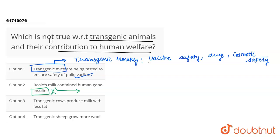But the gene that was inserted was for alpha-lactalbumin. This protein amount was more than human insulin, so this statement is wrong.